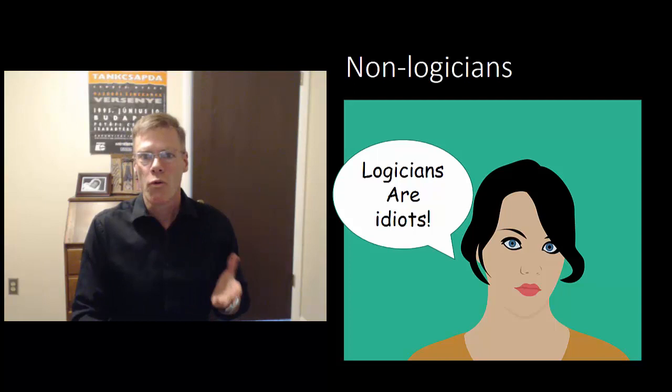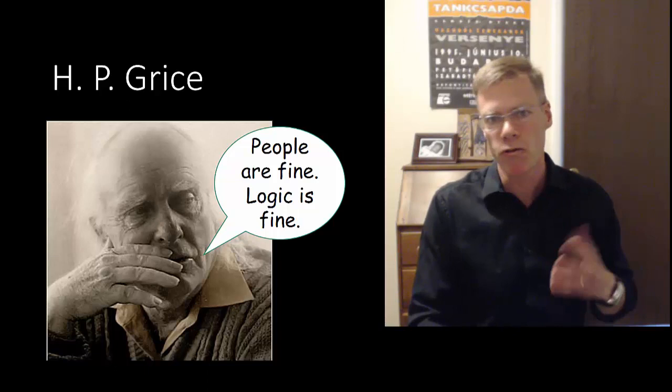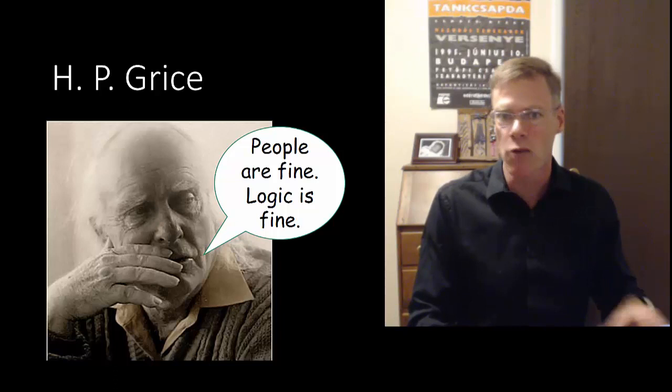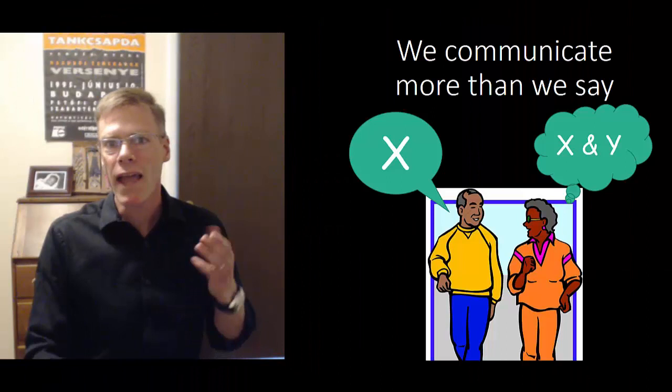Well, along comes Grice, H.P. Grice, and his approach to the paradox was to say, well, no, come on. People are fine. They're perfectly logical, perfectly rational. And our logic is fine. We've got this down. We've been working on it for a couple thousand years now. We understand logic.